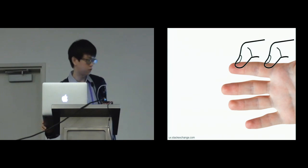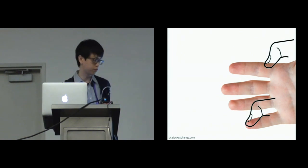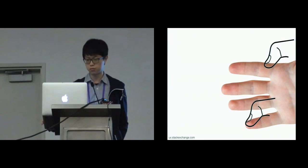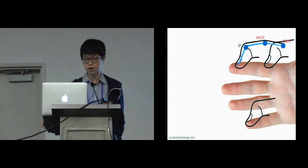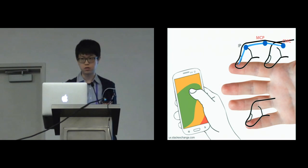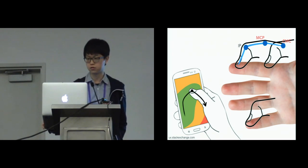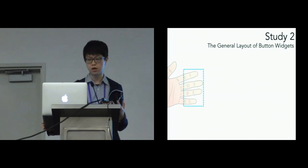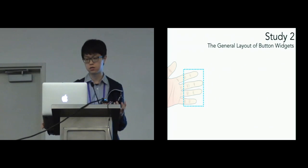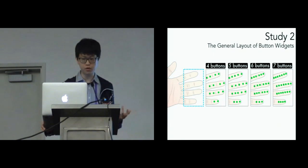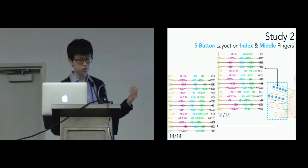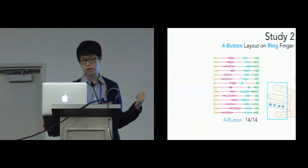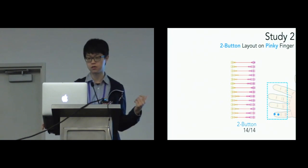Inner thumb movement may affect accuracy, but diagonal thumb movement may not. This is reasonable because looking at thumb anatomy, diagonal movements in this study still fall within the comfort region, similar to how we use smartphones. We examined each button layout to understand how many buttons can be augmented per finger. For index and middle fingers, five buttons can be augmented; for ring fingers, four; and for pinky fingers, two. This gives at least 16 button layouts per participant.